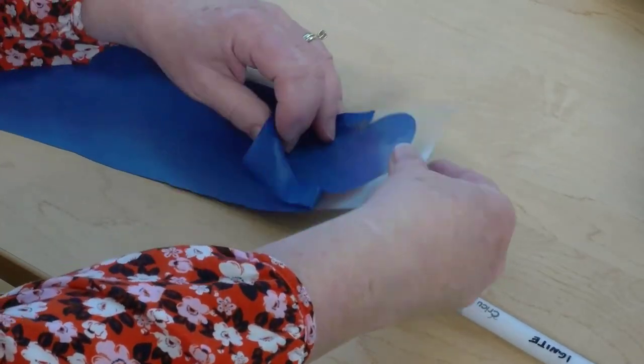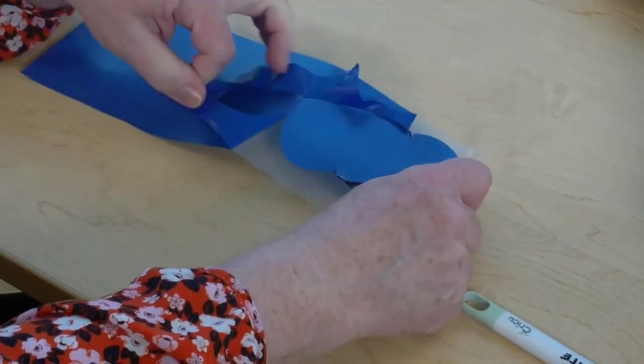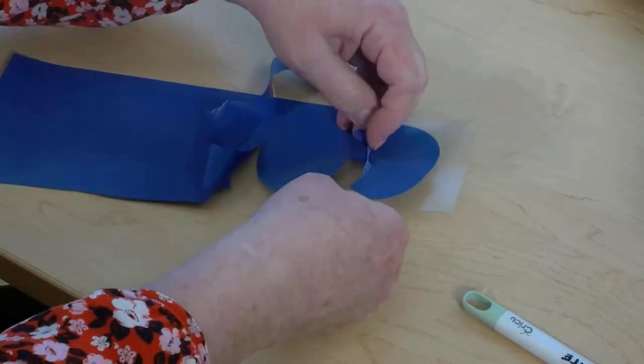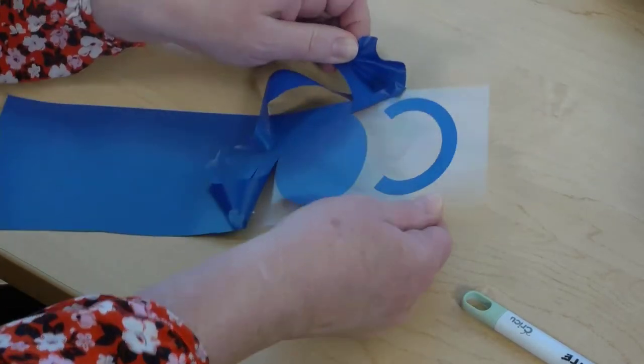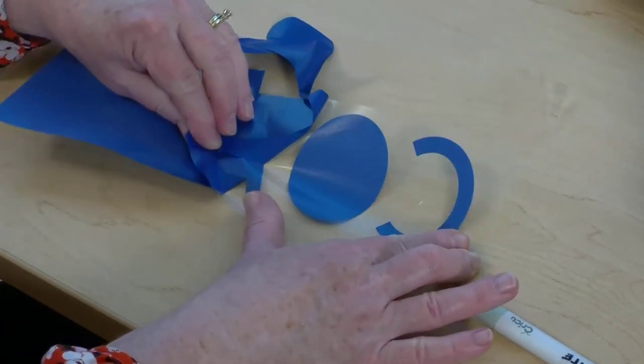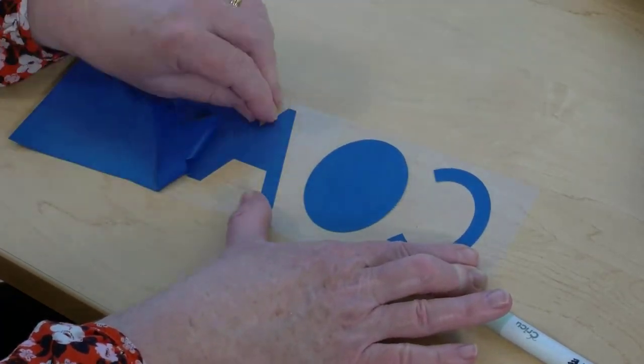I've sped up this video a bit, but you'll notice the plastic carrier sheet is very sticky, so peel slowly and carefully to make sure you don't take off your design, just the vinyl around your design.